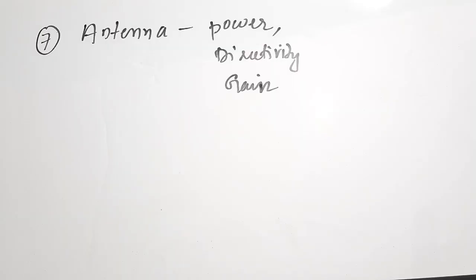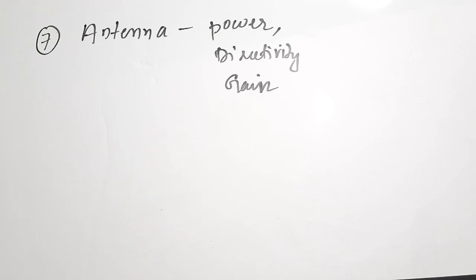The seventh topic is antennas. Antennas are very important — especially antenna power, directivity, gain, types of antennas, and radiation patterns. Concentrate on finding antenna power, its gain conversion in dB, directivity, half-power beam width of E and H fields, and gain based on directivity. We have done a detailed video on antenna types and radiation patterns you can refer to.